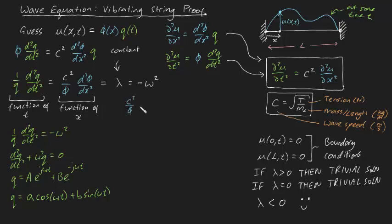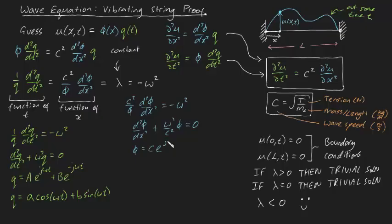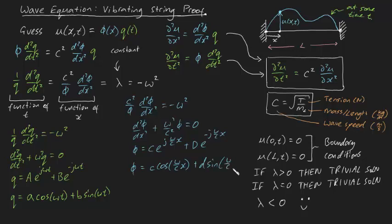Now let's find an expression for phi by doing a similar thing. We know that c squared over phi times d squared phi dx squared equals minus omega squared, which rearranges to d squared phi dx squared plus omega squared over c squared times phi equals zero. Solving this similarly, we get phi equals some constant c times cosine(omega x over c) plus another constant d times sine(omega x over c).